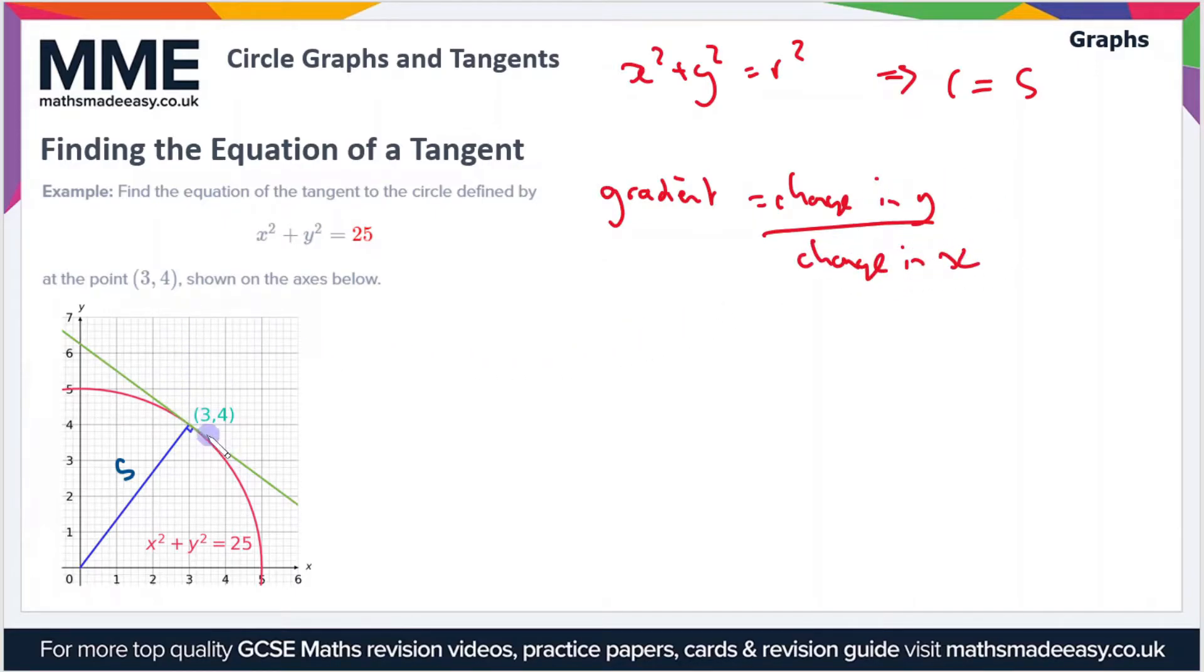The change in y, if we use the point three four, is obviously four, and the change in x is three. Therefore the gradient of the radius, we'll call it gradient r for short, is four divided by three.